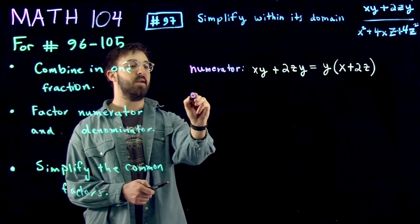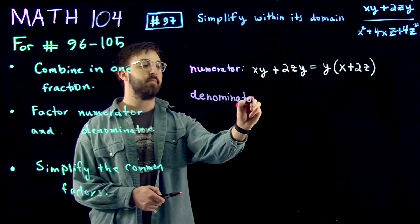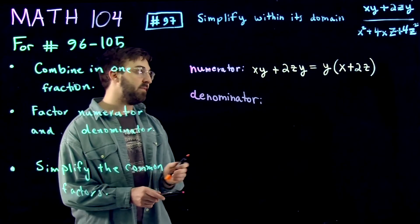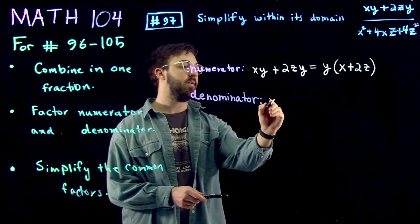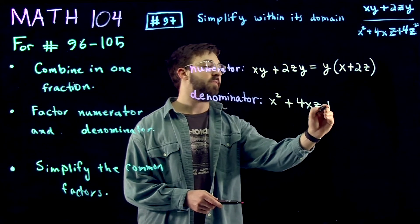So now we turn to the denominator. That is x squared plus 4xz plus 4z squared.